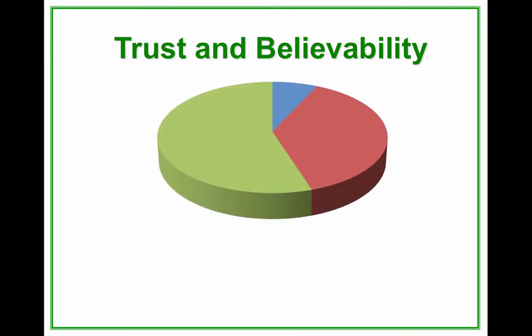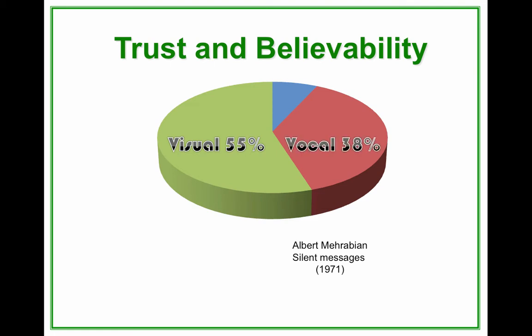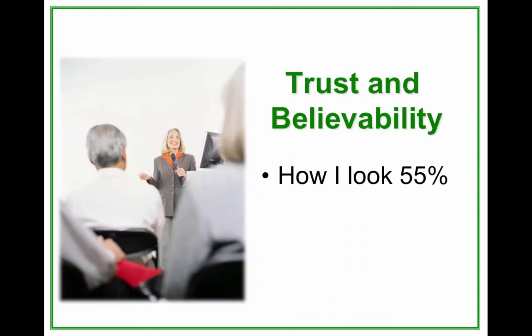Research on trust and believability for training shows that the visual accounts for 55% of the whole, whereas vocal quality accounts for 38%, and the words that you say are only 7% of the whole. So how I look — that 55% — is really critical, and that has a lot to do with the images that you choose to use.